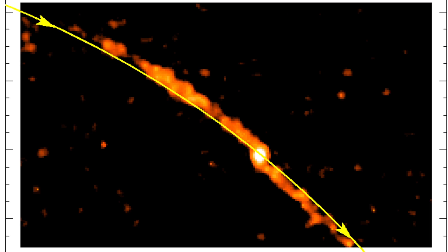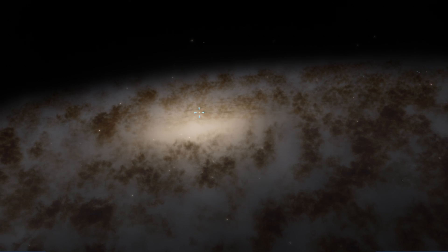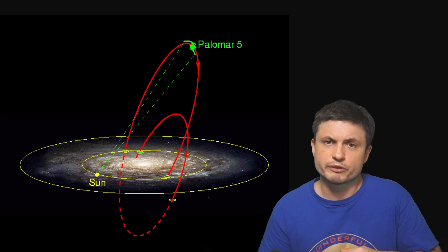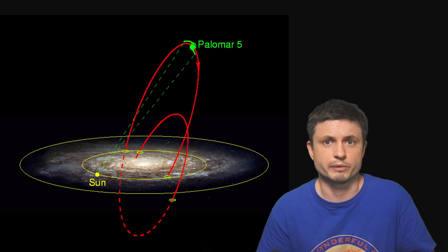And with further measurements they realized that this was basically a globular cluster you see right here that's being tidally stripped apart by the powerful gravitational forces from the Milky Way galaxy. But there are a lot of features that make Palomar 5 kind of unique and different from other clusters.